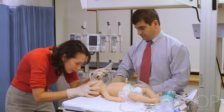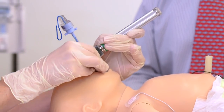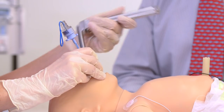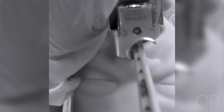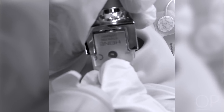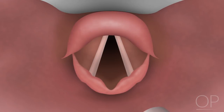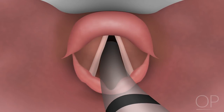Once the vocal cords and glottis are visualized, the provider performing the intubation should keep focus on the vocal cords. The endotracheal tube should be handed to the intubator by one of the other team members. The tube should be inserted from the right side of the mouth through the vocal cords using one smooth motion. Avoid insertion of the endotracheal tube into the barrel of the blade as this will block your line of sight. The tube should be advanced into the trachea to the appropriate depth; cognitive aids such as the table from the neonatal resuscitation program are available. Endotracheal tubes may have lines near the distal end to guide depth of insertion.